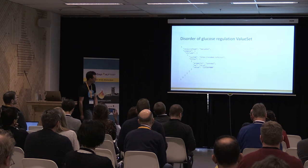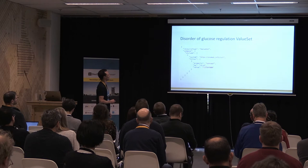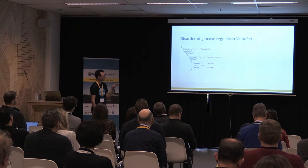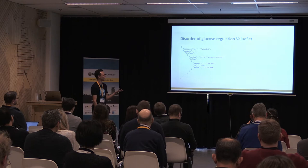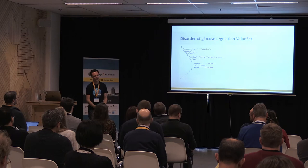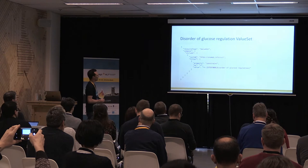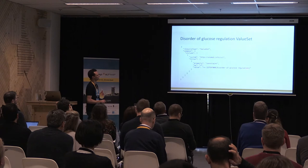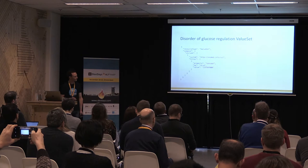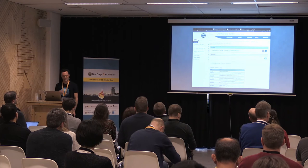This is what our value set might look like: simply include SNOMED CT with the filter concept is a specific code — meaning descendants-or-self of that code and all its descendants are included. That's our disorder of glucose regulation code, and upon expanding this value set we'd get 115 SNOMED codes. An alternate way is to use the constraint property, which lets you put in a full ECL expression, giving you the full power of ECL.